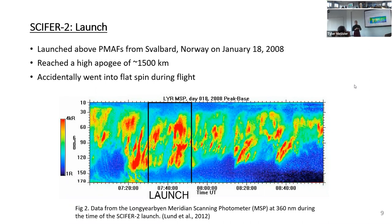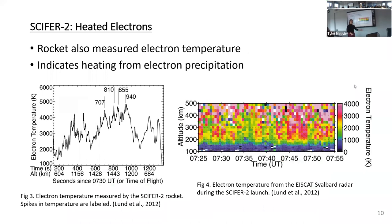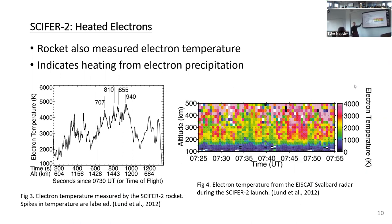We got to see high altitudes, which we'll be seeing in the next slides. The rocket did accidentally go into flat spin, which made the data interesting. It went into quite extreme rolling, but we knew the rotation period so we could figure out where it was pointing and when. During this launch we specifically flew over PMAPs, and we had an instrument on board to measure electron temperature, so we could see whether those electrons were heated, indicating type 2 upwelling as previously mentioned.